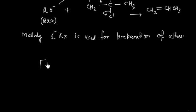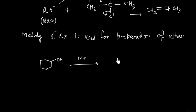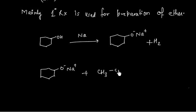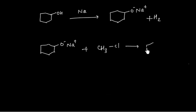For example, if we take an alcohol and treat it with sodium, we get the alkoxide ion RO⁻ Na⁺ and hydrogen gas is released. When this alkoxide ion reacts with alkyl halide — say CH₃Cl — we get the final ether product with an OCH₃ group, plus NaCl.